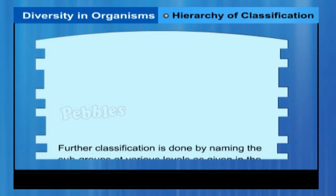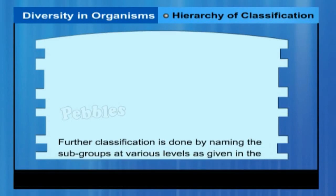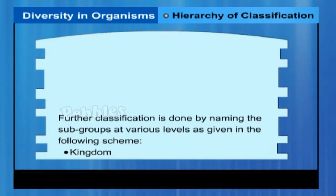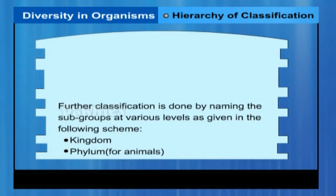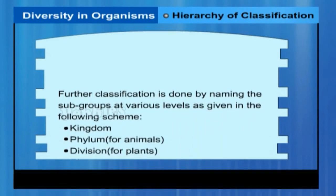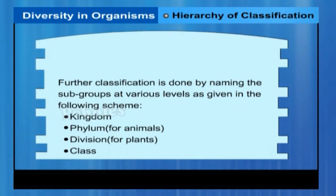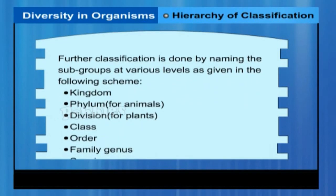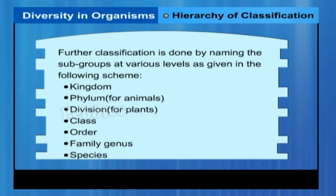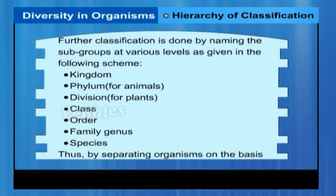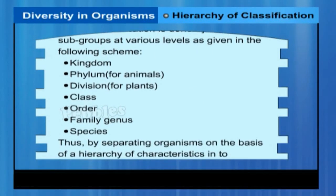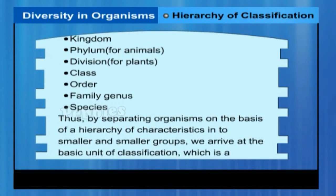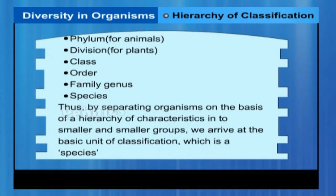Further classification is done by naming the subgroups at various levels as given in the following scheme: Kingdom, Phylum (for Animals) or Division (for Plants), Class, Order, Family, Genus, Species. Thus, by separating organisms on the basis of a hierarchy of characteristics into smaller and smaller groups, we arrive at the basic unit of classification, which is a species.